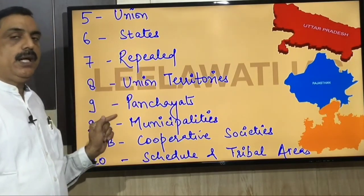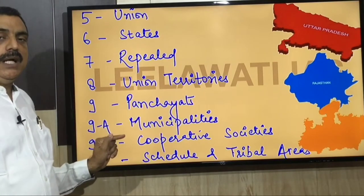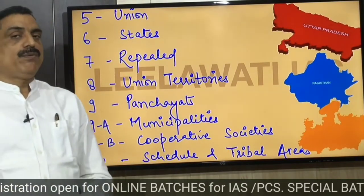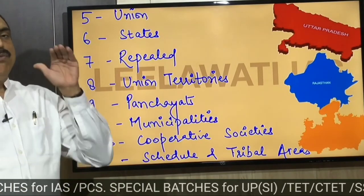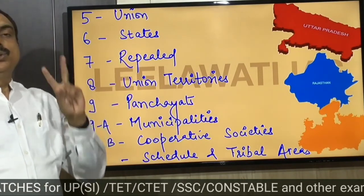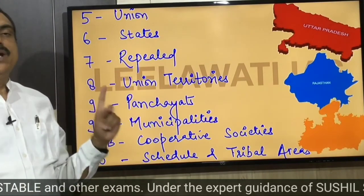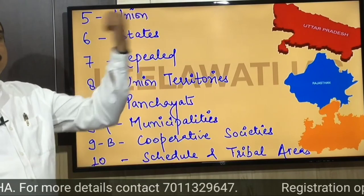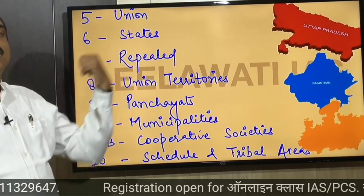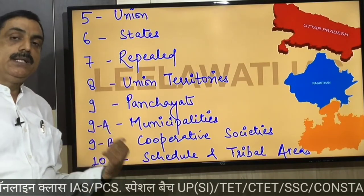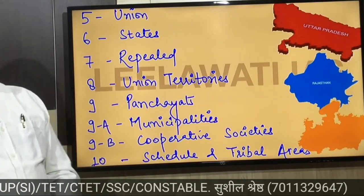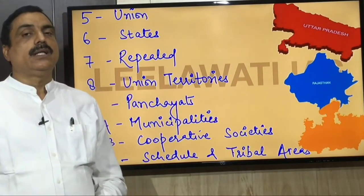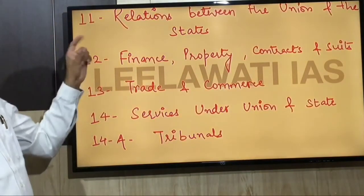Quick revision from Part 1 to Part 10: One — father and son; Two — citizenship; Three — Fundamental Rights; Four — Directive Principles; Four A — duties. Then Part 5 — father; Six — son; Seven — repealed; Eight — UTIs; Nine — panchayats in India, with 9A municipalities and 9B cooperative societies; and Ten — scheduled and tribal areas. What an easy pattern to retain in your brain!